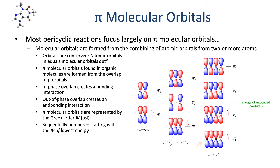and Psi-3 is an anti-bonding molecular orbital. On the right, we see the pi molecular orbitals of 1,3-butadiene. Each of the four sp2 carbons contributes a p-orbital to the system, giving four pi molecular orbitals. Psi-1 and Psi-2 are bonding molecular orbitals, while Psi-3 and Psi-4 are anti-bonding molecular orbitals.